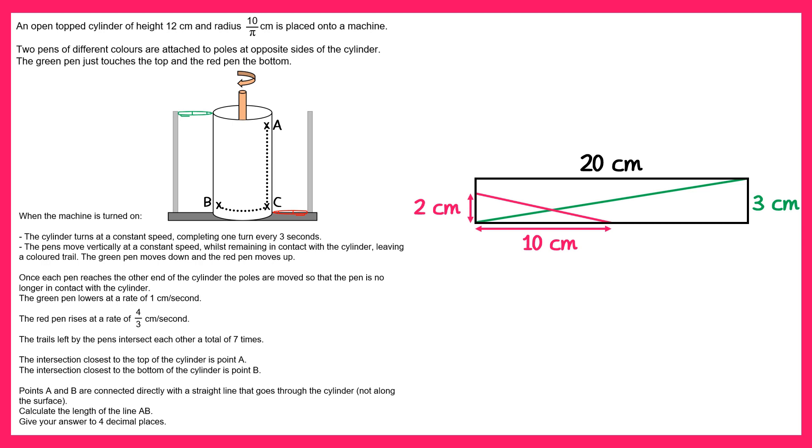What we will do now is imagine that the bottom left corner of this rectangle is the origin of a set of axes. We're going to treat the green and red lines like their straight line graphs and find their equations. We'll start with the green one. So the gradient of the green one is the change in y over the change in x, the change in y is 3, and the change in x is 20 so it's 3 over 20. And it also crosses at the origin so the intercept is 0, so the equation of the green line is y equals 3 over 20x.